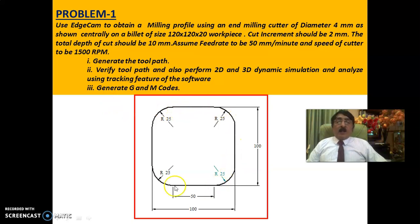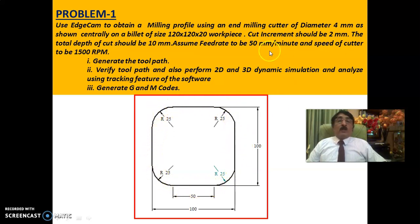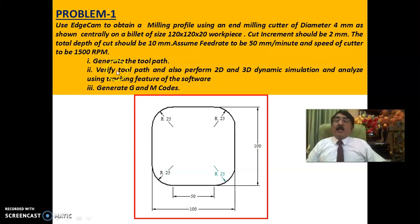This is the profile. The cutter is of diameter 4 and will move only along the profile. Each pass goes to minus 2 mm depth of cut, and it does this five times to obtain a total depth of cut of 10 mm. The assumed feed rate is 50 mm per minute and cutter speed is 1500. We need to generate and verify the toolpath, perform 2D and 3D dynamic simulation, and generate G&M codes.